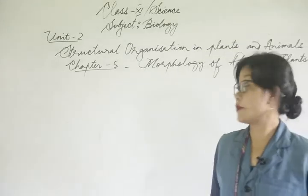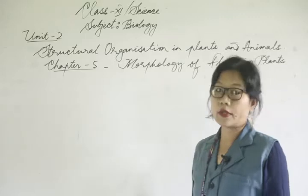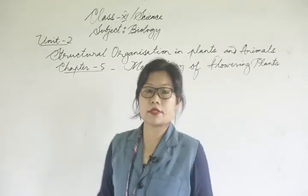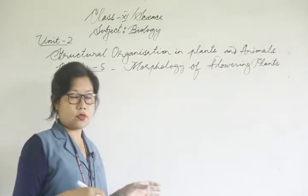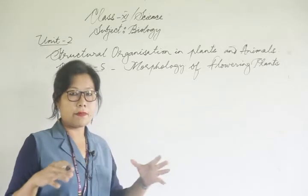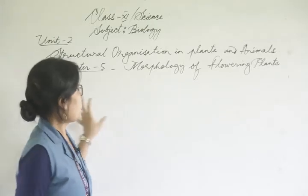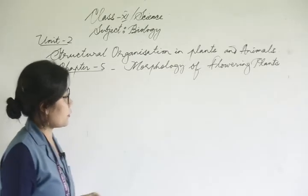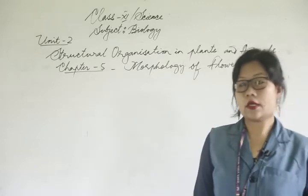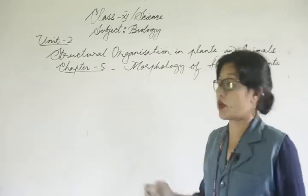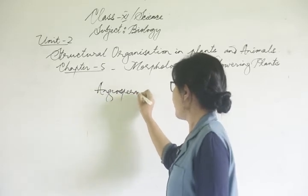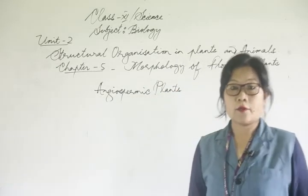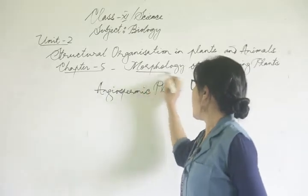Today we are going to discuss unit number two biology of class 11 science. The name of the unit is 'Structural Organization in Plants and Animals'. Under this unit, the first chapter is morphology of flowering plants — that is, angiospermic plants. We will study the morphology of angiospermic plants.